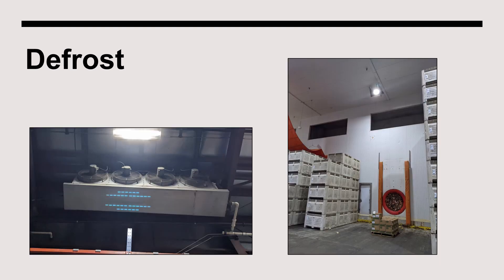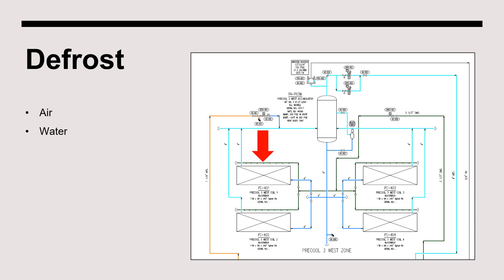We'll now turn our attention to the topic of defrosting an air cooling evaporator. Due to moisture in the air and the low temperature maintained in the evaporator, frost will accumulate on the evaporator fins. Periodically, the frost must be removed by defrosting the coil. There are three primary methods. The first is air defrost, accomplished by shutting the unit off so that ambient air can warm the coil and melt the frost. Water defrost is a second method, accomplished by shutting off the refrigerant liquid feed and evaporator fans and then spraying ambient temperature water on the surface of the coil, which melts any frost. The water collects in the pan, which is equipped with a drain pipe.